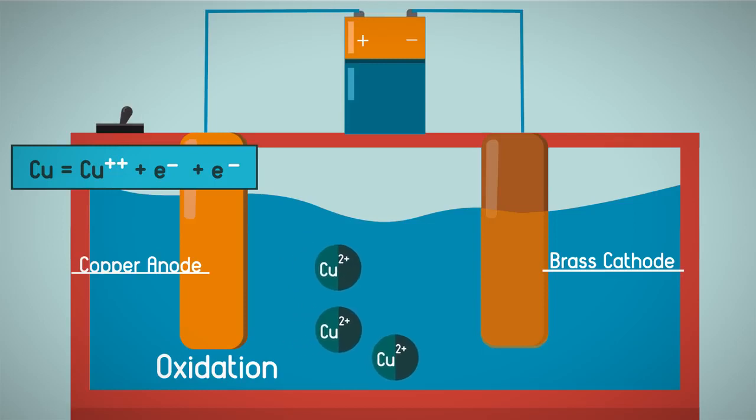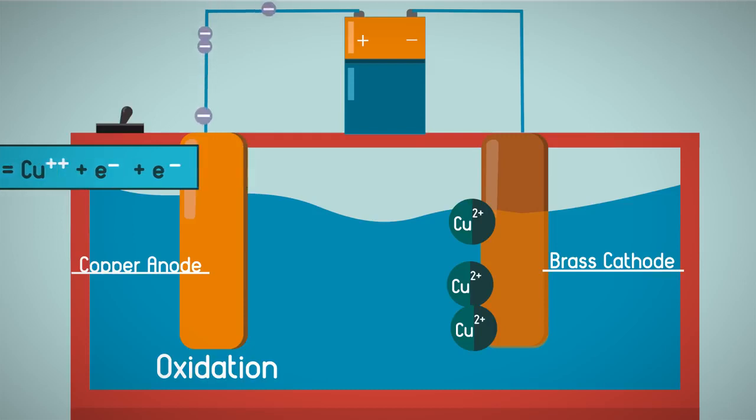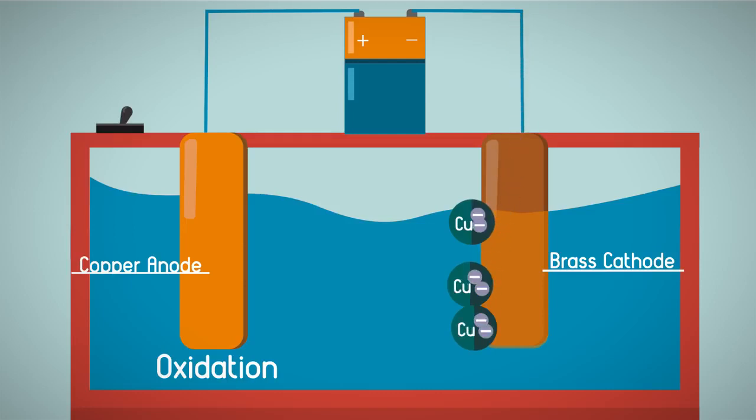So the copper ions move from the anode to the cathode, but not along the wire. The copper anode bar gradually dissolves to replenish the copper ions in the electrolyte solution, so the solution stays at the same concentration.